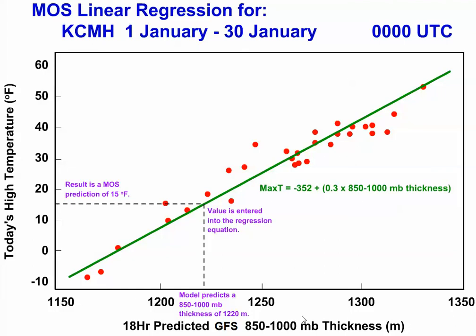After a sufficient number of observations has been collected, a linear regression is performed to find a simple equation that best characterizes the observed data. The line of best fit here is marked in green.